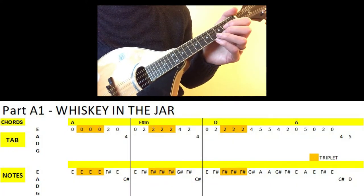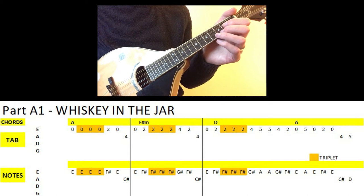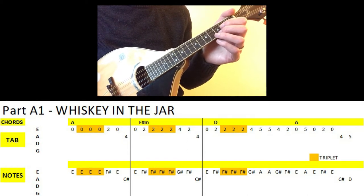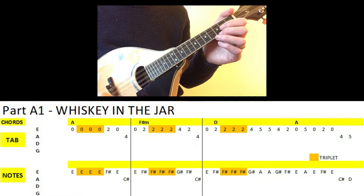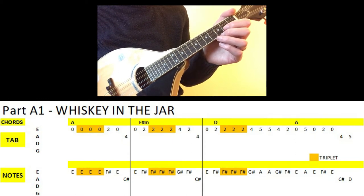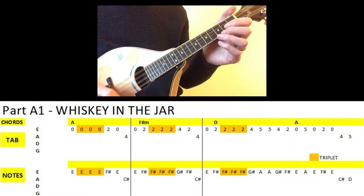So part A is basically the verse of the song and you'll notice that some notes are highlighted in orange. These are triplets and where you play three notes in quick succession. Okay, let's play it through slowly.